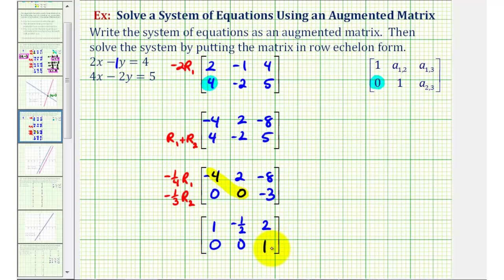Now we're going to write this back as a system of equations. So looking at this first row, this is telling us that x minus one-half y equals two, but now looking at the second row, this is telling us that zero x plus zero y equals one, or just zero equals one.